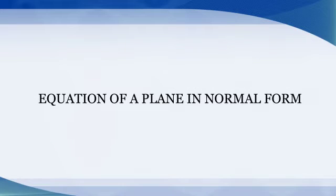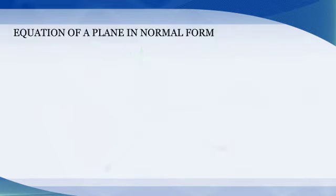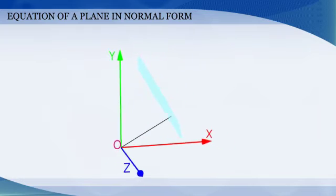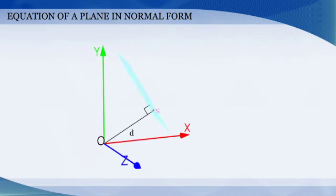Equation of a plane in normal form. Consider a plane whose perpendicular distance from the origin is d, where d is not equal to 0.